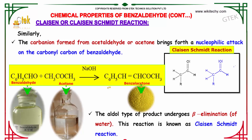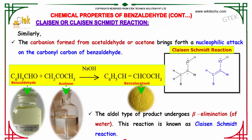Similarly, the carbanion formed from acetaldehyde or acetone undergoes a nucleophilic attack on the carbonyl carbon of benzaldehyde. The aldol-type product undergoes beta elimination. This reaction is known as the Claisen-Schmidt reaction — an aldehyde and ketone reacting in the presence of sodium hydroxide to form benzalacetone.